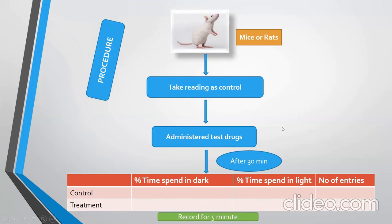Now, there are various controversies regarding this method. First, different laboratories can produce variable results due to differences in the type and severity of external stressors. Additionally, baseline levels in the control group, which are key in determining exploratory activity, can vary due to the strain, age, and weight of the animal.